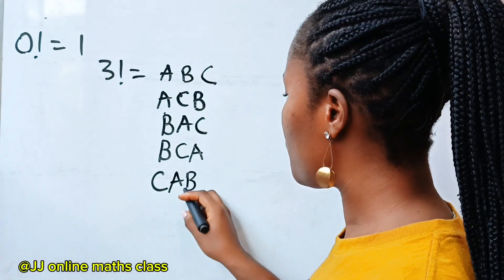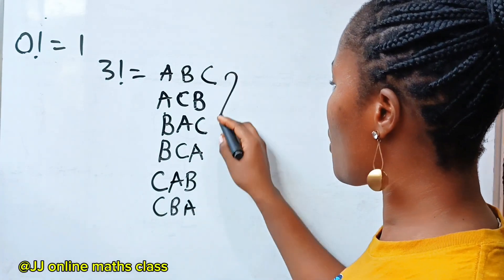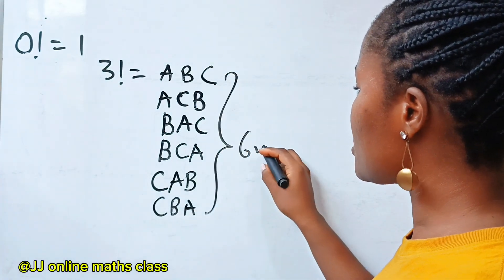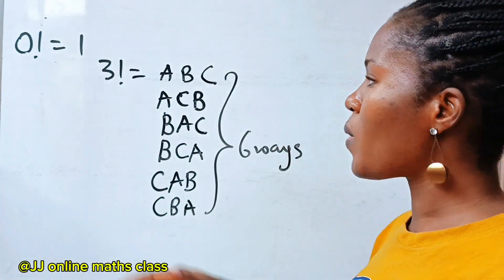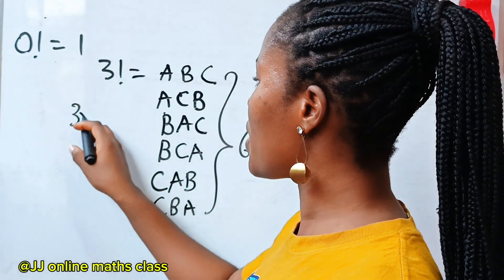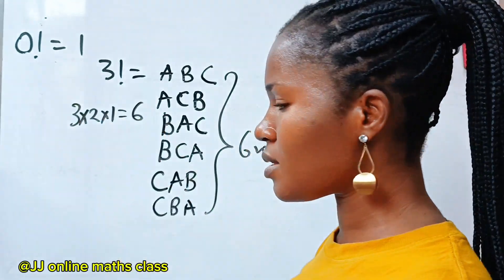Then, if I keep C constant, I will write A, B or B, A. So you can see that we have six ways, six ways to arrange three items, which is why three factorial is three times two times one, which will give us six.